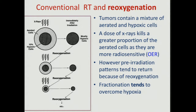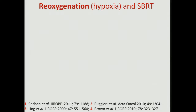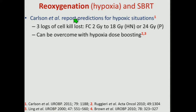Fractionation tends to overcome hypoxia in conventional treatments. But what happens in hypofractionated treatments — SBRT? David Carlson's publication shows that if you compare a full-course 2-gray treatment of multiple fractions against a single dose of 18 gray for head and neck, or 24 gray for prostate, you effectively lose three logs of cell kill. However, this three logs of cell kill can be overcome if you give hypoxic-boosting treatments, as Mike discussed in his earlier talk.